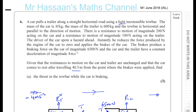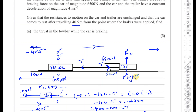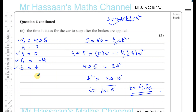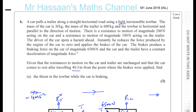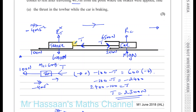The key takeaway from this question is that for connected particles moving in the same direction, you can treat the whole system as one particle sharing a common acceleration. You can also consider each part separately with that same acceleration. To find the thrust, consider the trailer alone since all other values are known. To find the car's mass, consider the car alone once the thrust is known. This is the standard approach for connected particles problems.